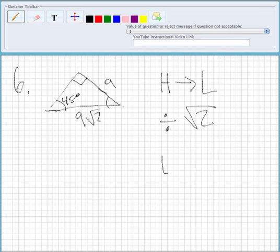If you're going from a leg to a hypotenuse, you're going to multiply by root 2. But since we know the hypotenuse, the longest side, the one opposite of the right angle, we're going to divide by root 2 to get the leg.